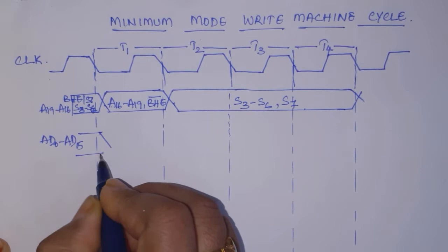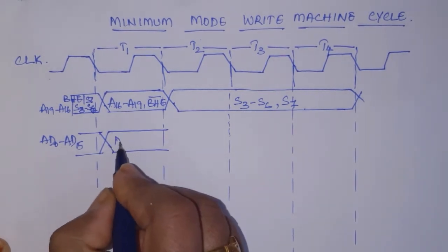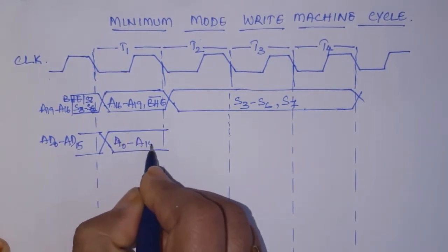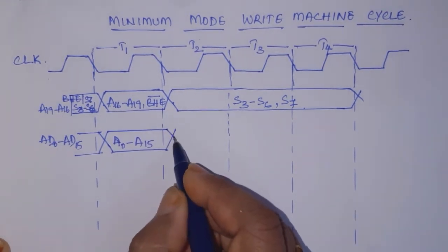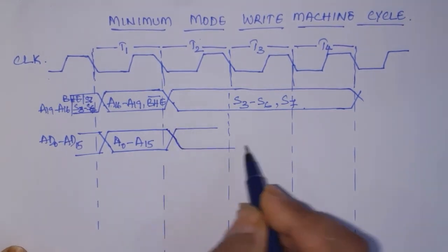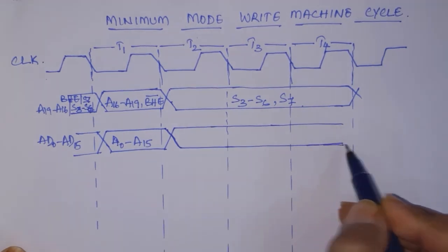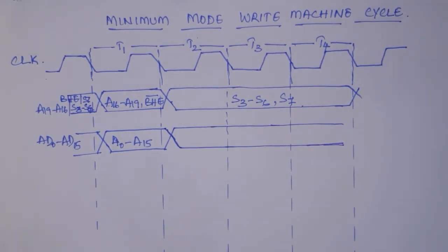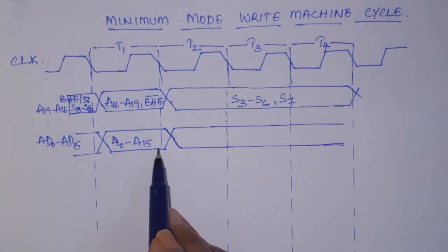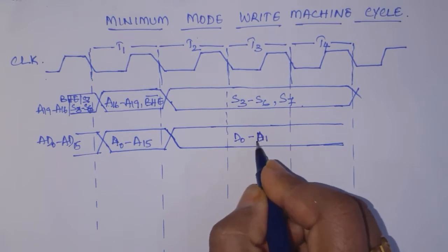Now let us represent AD0 to AD15, the multiplexed address and data lines. We have A0 to A15 in the first T-state, then there will be a changeover once ALE is latched. Here you can observe the difference between read and write machine cycles: in a write machine cycle — memory write or IO write — the data is with the processor, so it can place the data immediately after the address is latched. So here it will be D0 to D15.